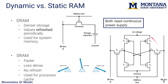SRAM will generally be used in caches while DRAM is used in main memory. Disk storage used to be magnetic — now it's based on flash memory. The advantage of disk/flash is that you don't need electricity to maintain data, but they're much slower.